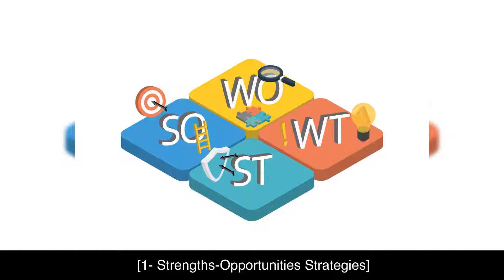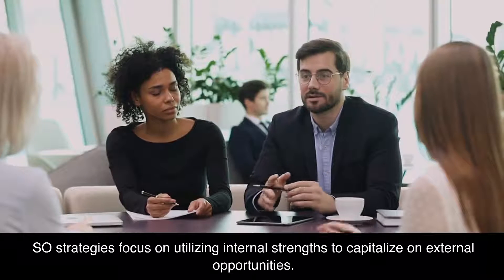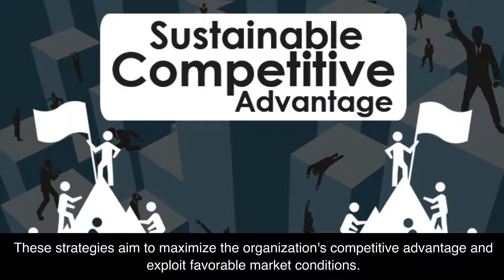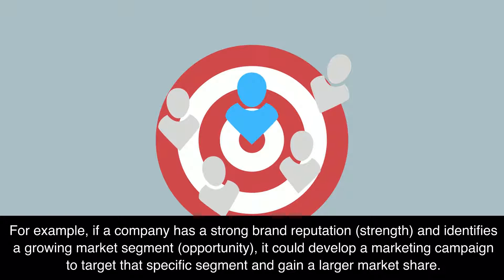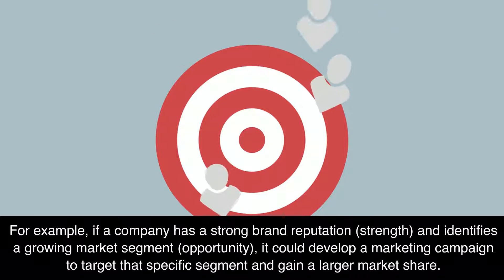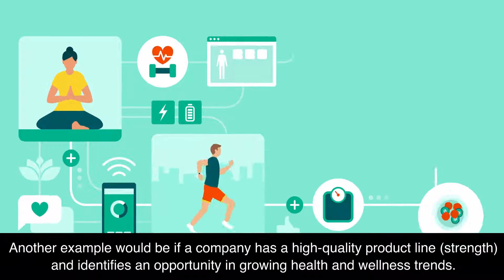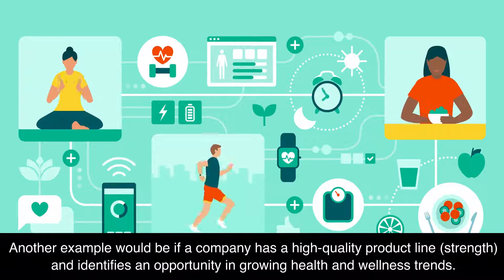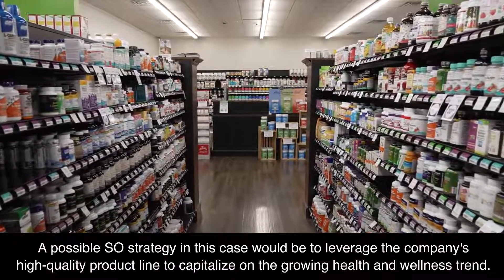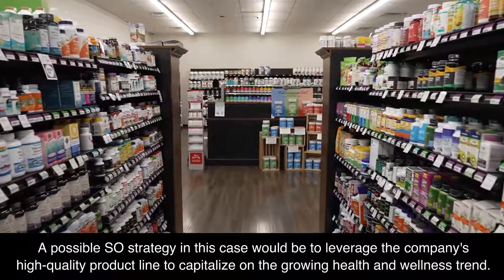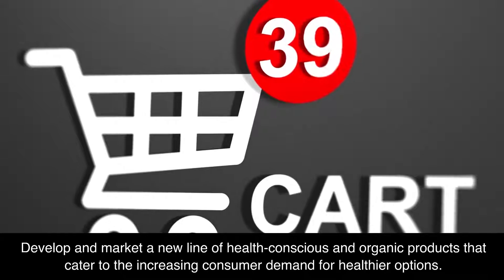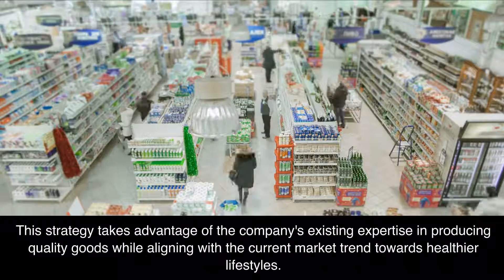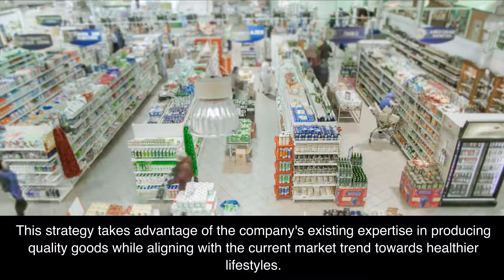1. Strengths-Opportunities strategies. SO strategies focus on utilizing internal strengths to capitalize on external opportunities. These strategies aim to maximize the organization's competitive advantage and exploit favorable market conditions. For example, if a company has a strong brand reputation (strength) and identifies a growing market segment (opportunity), it could develop a marketing campaign to target that specific segment and gain a larger market share. Another example: if a company has a high-quality product line (strength) and identifies an opportunity in growing health and wellness trends, a possible SO strategy would be to leverage the company's high-quality product line to capitalize on that trend — developing and marketing a new line of health-conscious and organic products that cater to increasing consumer demand for healthier options. This strategy takes advantage of the company's existing expertise in producing quality goods while aligning with the current market trend towards healthier lifestyles.